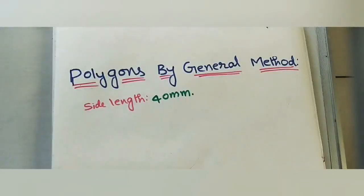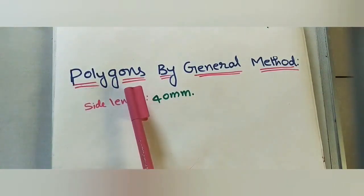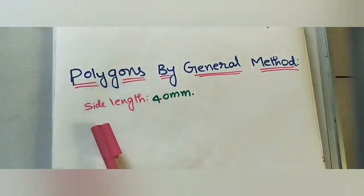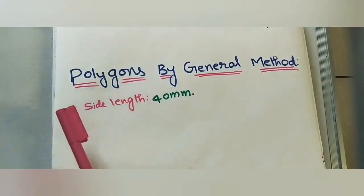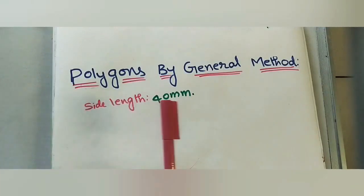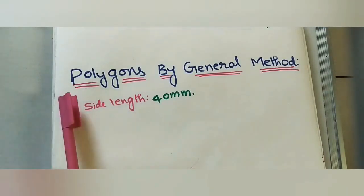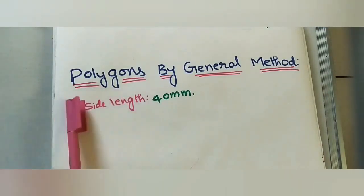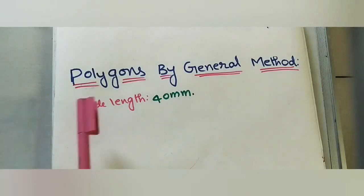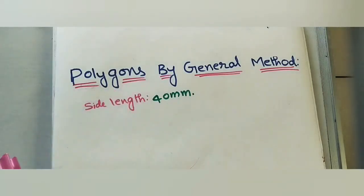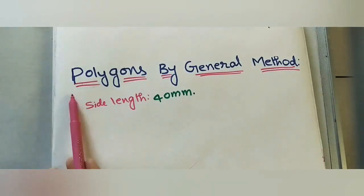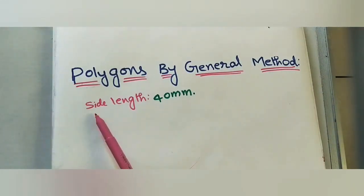Let us discuss how to draw polygons using the general method. A polygon with four sides is a square, five sides is a pentagon, six sides is a hexagon, and so on. In engineering drawing, we use regular polygons, where all sides have equal length and all corner angles are the same.